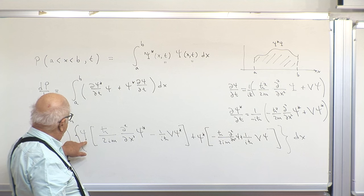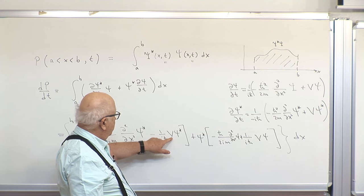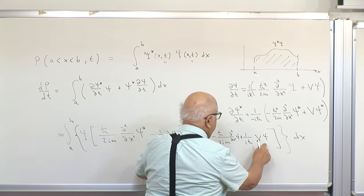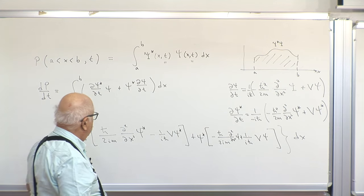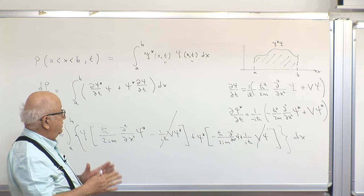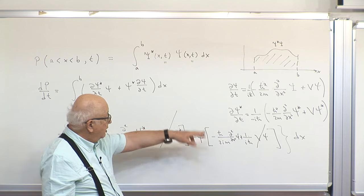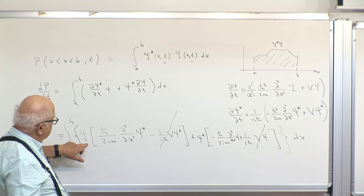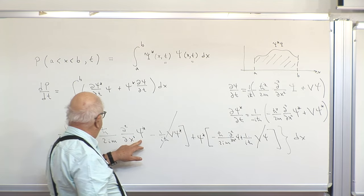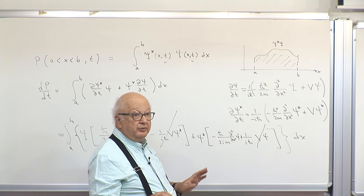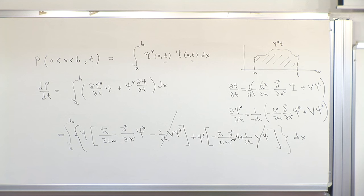Now I notice those potential terms cancel — one has minus one over i, the other plus one over i, and they are both psi star psi times V over h-bar. So those cancel. I'm left with psi times the second derivative of psi star, and psi star times the second derivative of psi with the opposite sign — very symmetrically. Now I proceed by integration by parts.